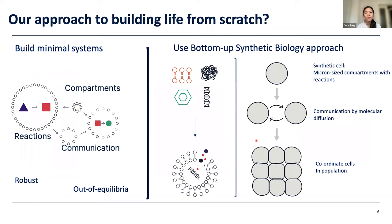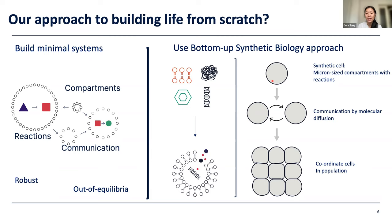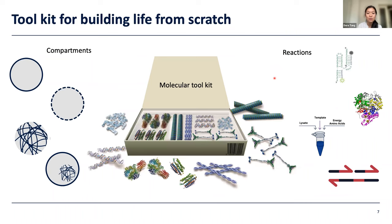So what is our approach to building life from scratch? My lab aims to build minimal systems which can support out-of-equilibrium behaviour with features of reactions, compartments, and communication. We do this using a bottom-up synthetic biology approach, where we self-assemble molecules into synthetic cells. These synthetic cells are micron-sized compartments which can contain reactions. These compartments can communicate by molecular diffusion to coordinate the cells within a population.